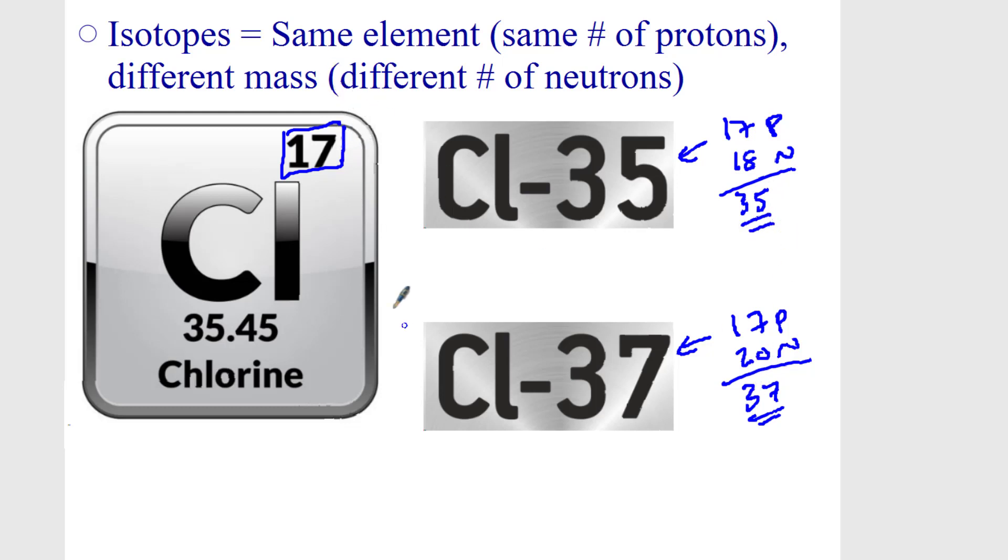So you can see an isotope is the same element, same number of protons, same atomic number, different mass, or different number of neutrons there. And we call that an isotope.